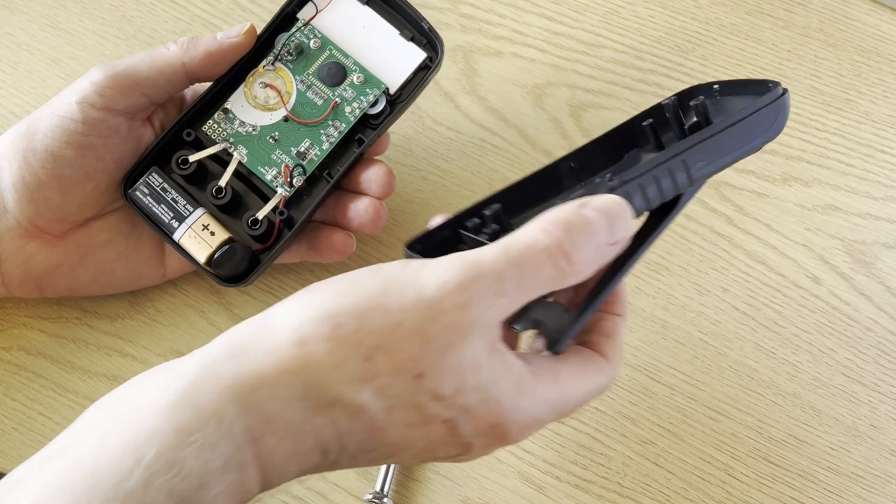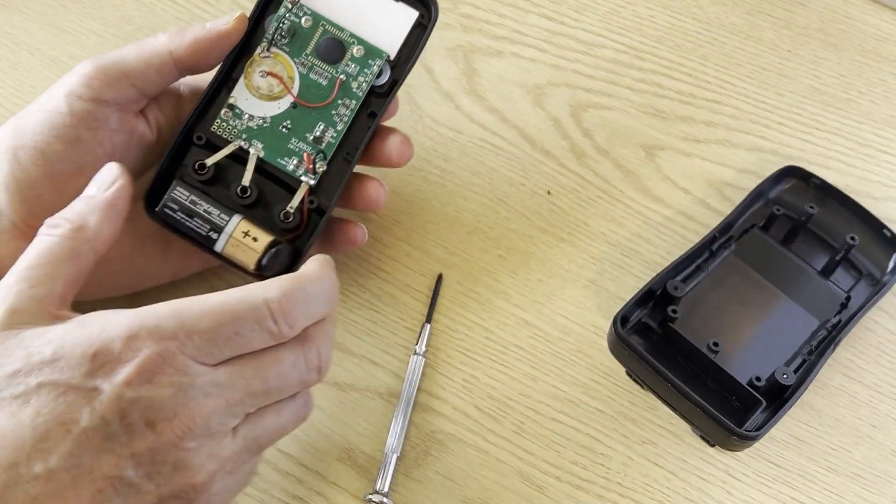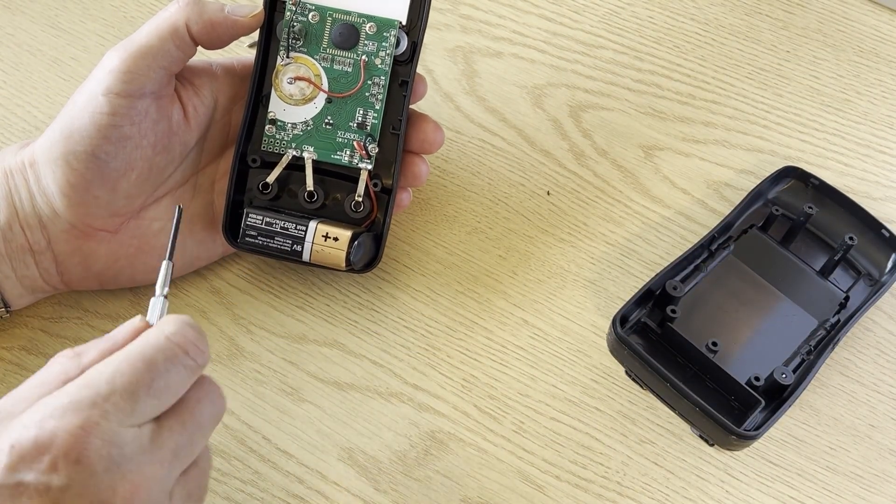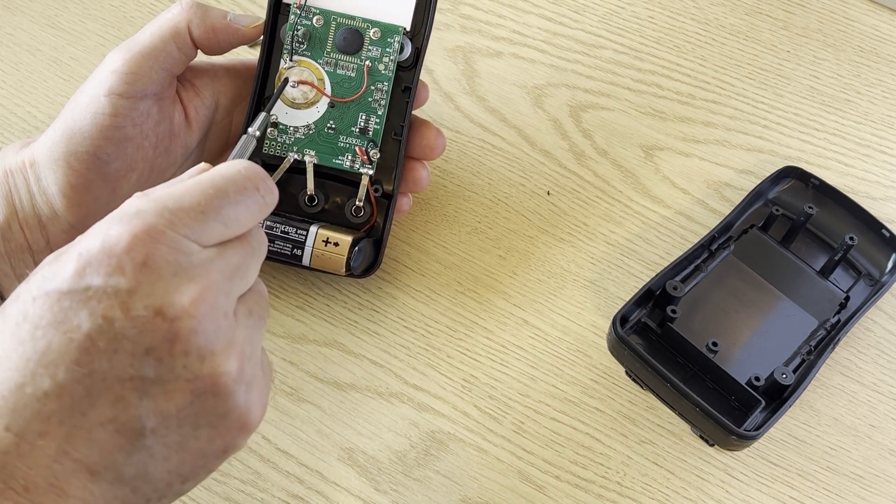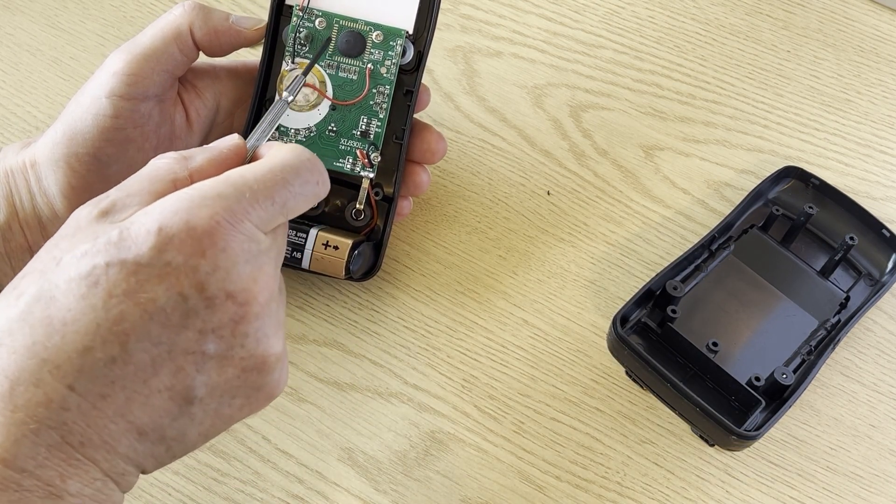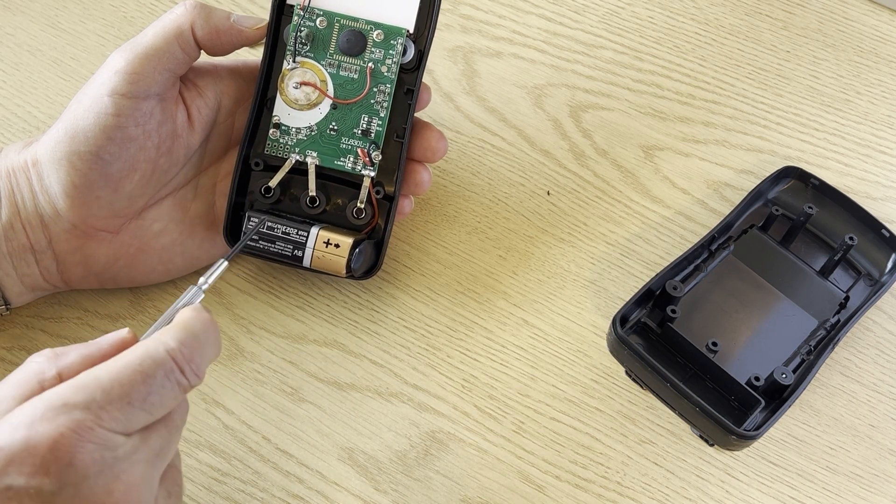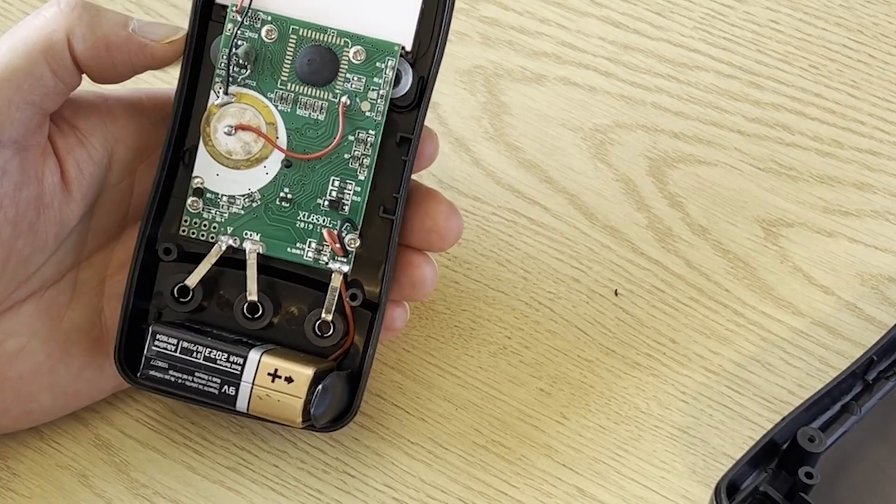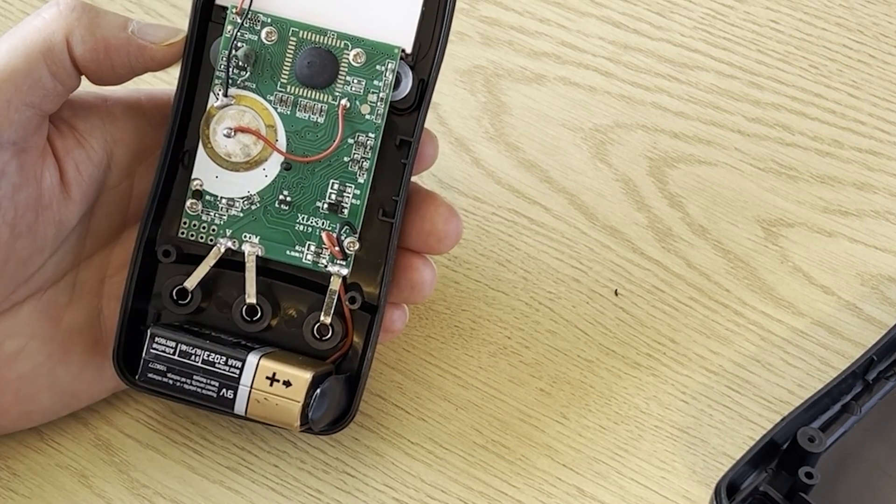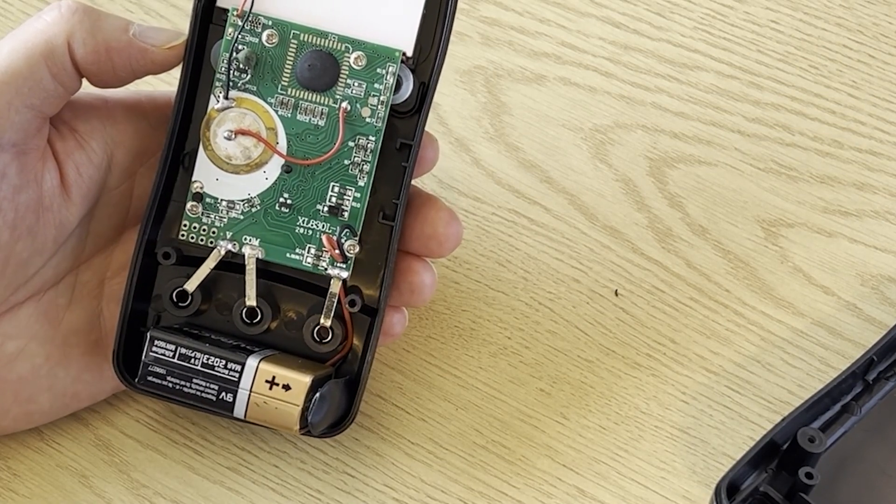So you've got the back here and the internal workings here. There's the battery and you can see the contacts there. You've got a buzzer there. You've got the main processing element there and the LCD display up there. And somebody's put a capacitor onto that one.